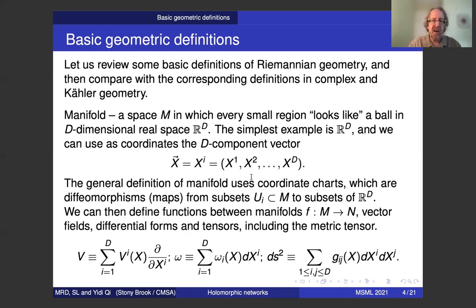I'm going to assume you know the basic definitions of Riemannian geometry, that manifolds are defined using coordinate patches. And in each patch a map to a region in D real dimensional space that defines coordinates. Once we have these definitions, we can define functions, vector fields, differential forms and tensors, and then the Riemannian metric, the bottom right definition in terms of a symmetric two-index tensor, GIJ.